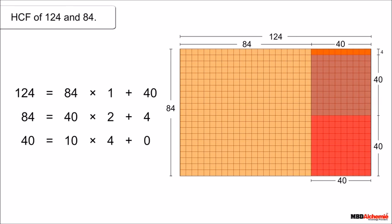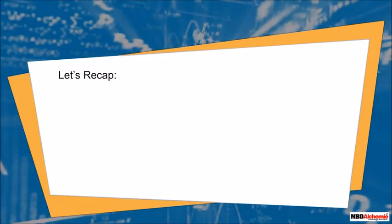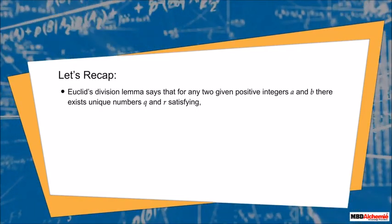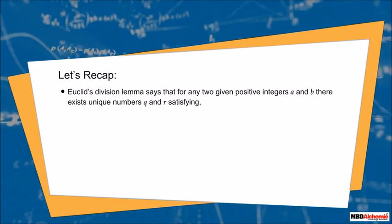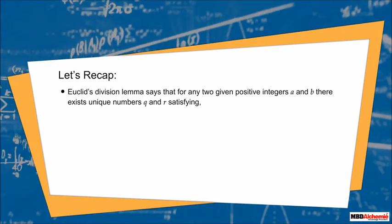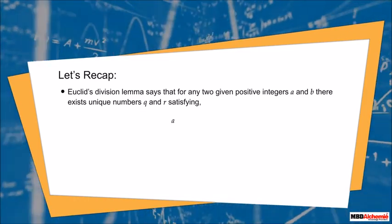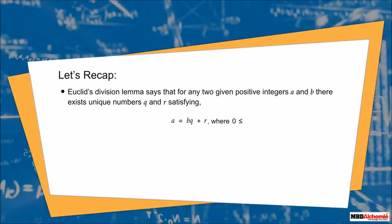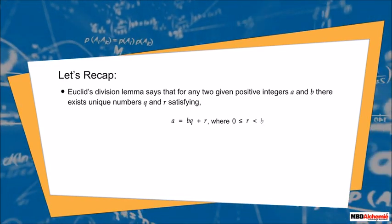This method of finding the HCF of two positive integers is called Euclid's division algorithm. To recap: Euclid's division lemma says that for any two given positive integers a and b, there exist unique numbers q and r satisfying a = bq + r, where r is greater than or equal to zero and less than b.